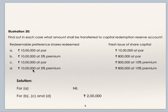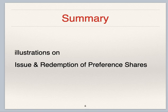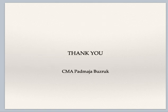Case 4: redeemable preference shares to be redeemed 10 lakhs at 5% premium, fresh issue 8 lakhs at 10% premium. Again, you have to compare capital with capital. Debit to capital is 10 lakhs, credit to capital is 8 lakhs, so the amount to be transferred to CRR is 2 lakhs. In this video we have seen issue and redemption of preference shares. Thank you.